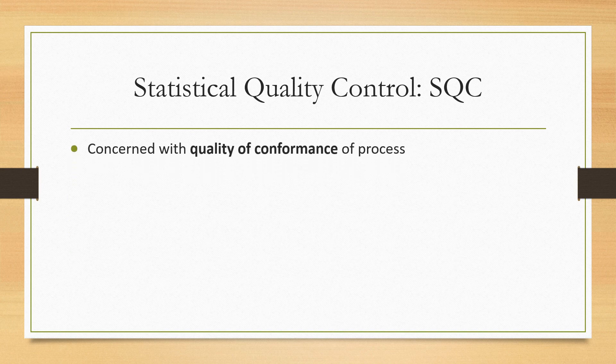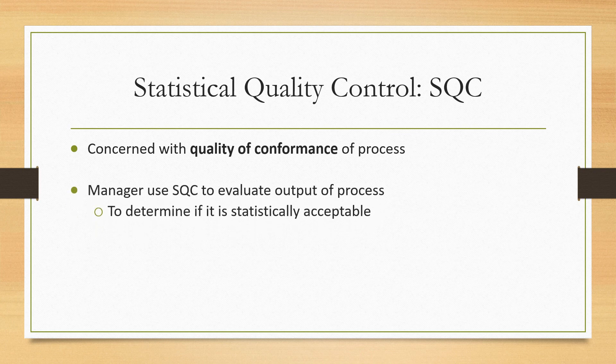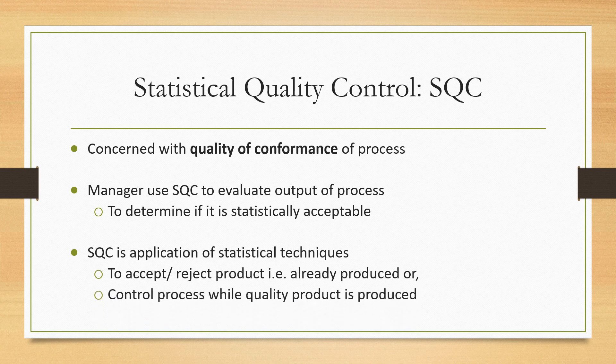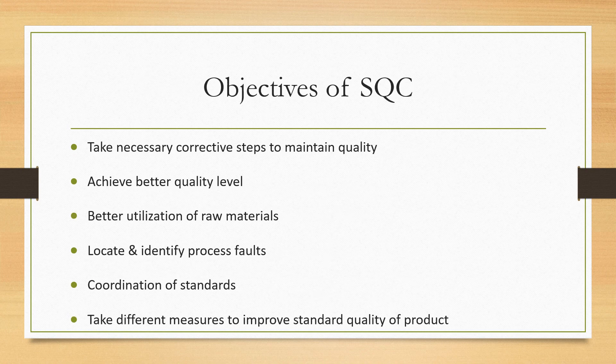Advantages and benefits of quality control include: uniform quality and reliability, reduced cost of material handling, higher operating efficiency, better utilization of resources, reduced inspection cost, reduced customer complaints, and better customer satisfaction. Statistical Quality Control (SQC) is concerned with the quality of conformance of the process. The manager uses SQC to evaluate the output of a process to determine if it is statistically acceptable. SQC is the application of statistical techniques to accept or reject already-produced products or to control the process while quality products are being produced. Objectives of SQC include: taking necessary corrective steps to maintain quality, achieving better quality levels, better utilization of raw materials, locating and identifying process faults, coordinating standards, and taking measures to improve the standard of quality.